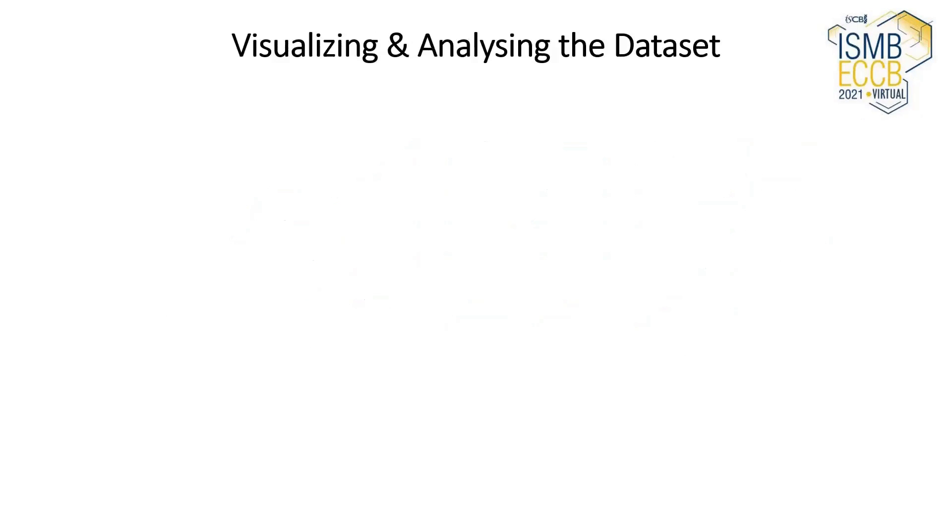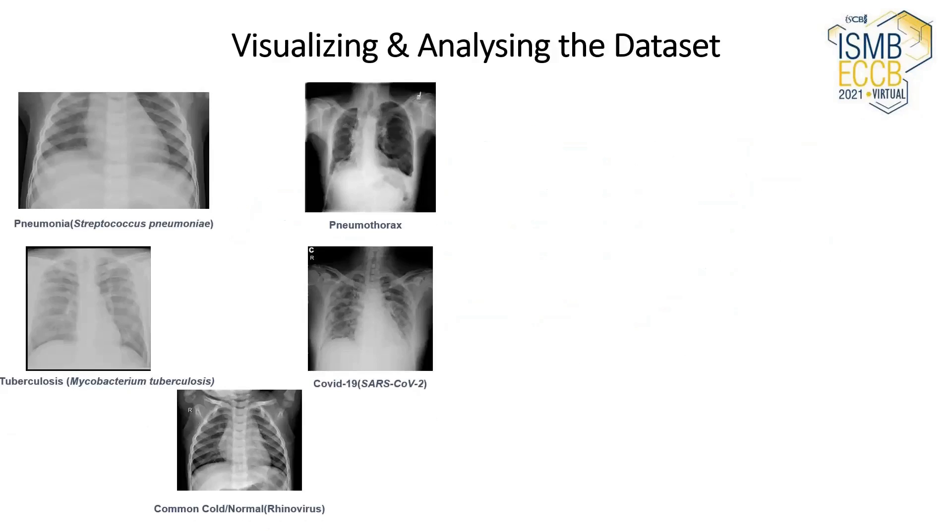Coming to the next slide, we visualize and analyze the dataset of images compiled to train our model. From the X-ray images, it is evident that we use five different types of diseases: pneumonia, pneumothorax, tuberculosis, COVID-19, and common cold.